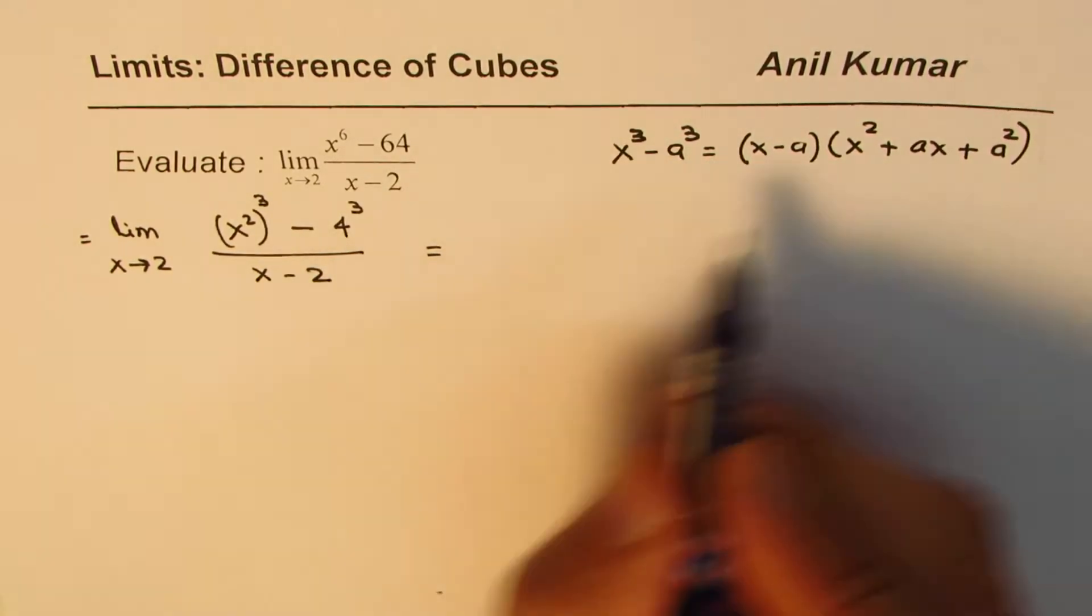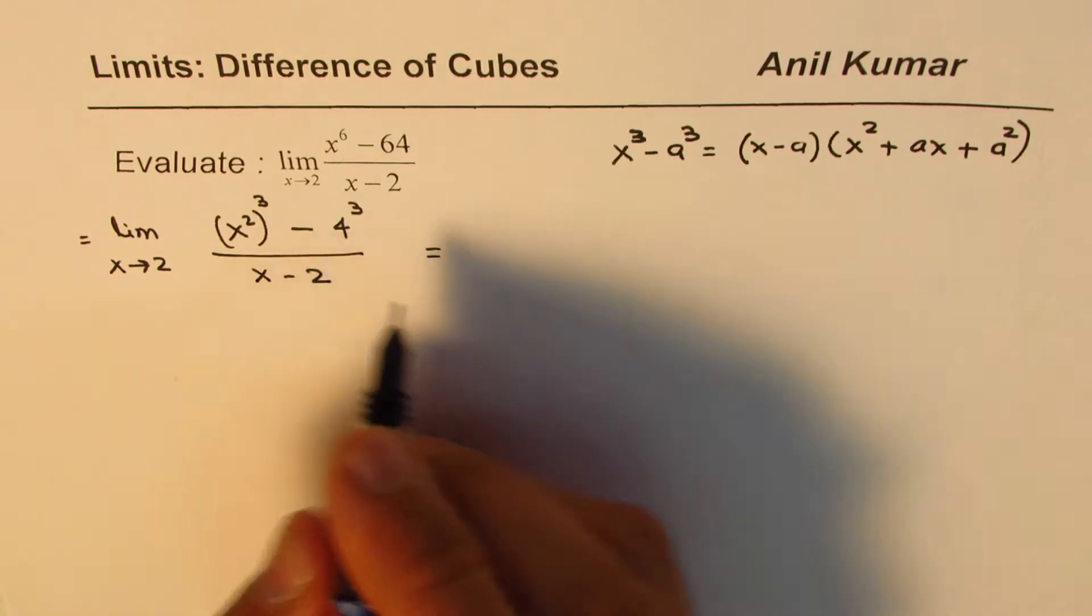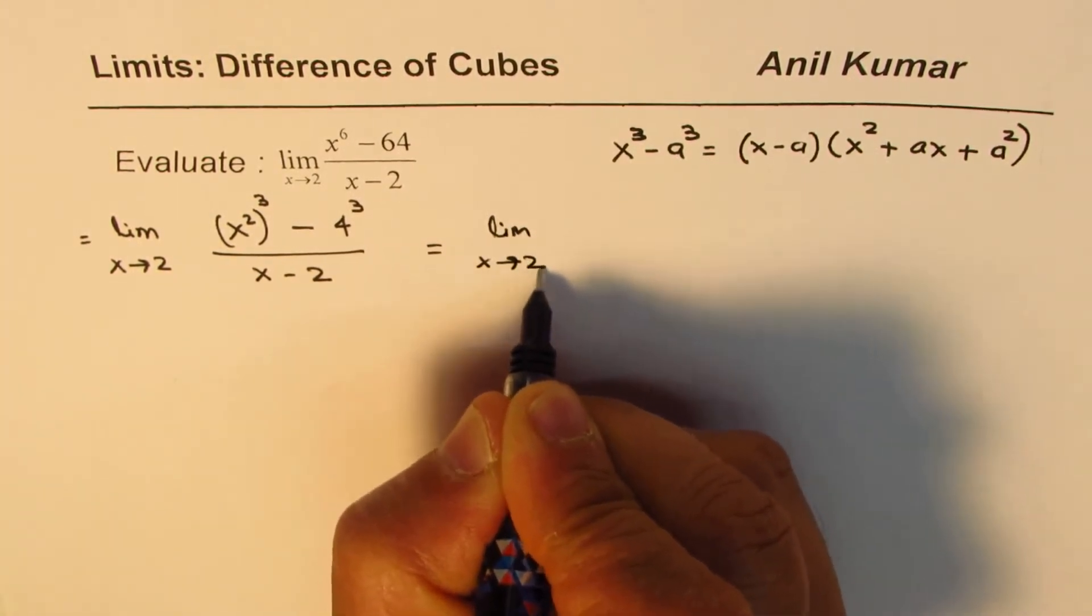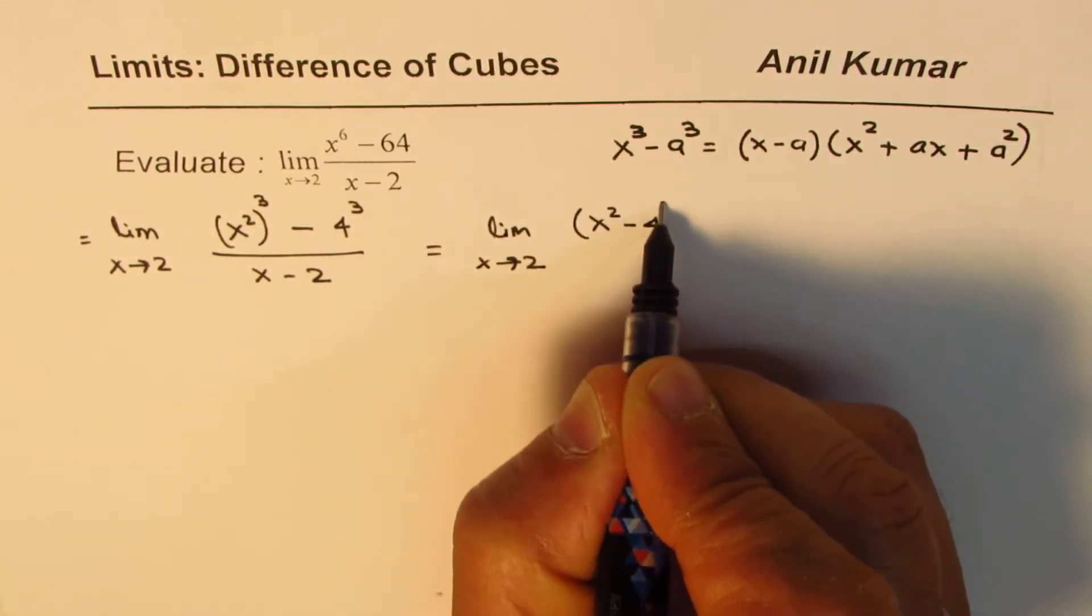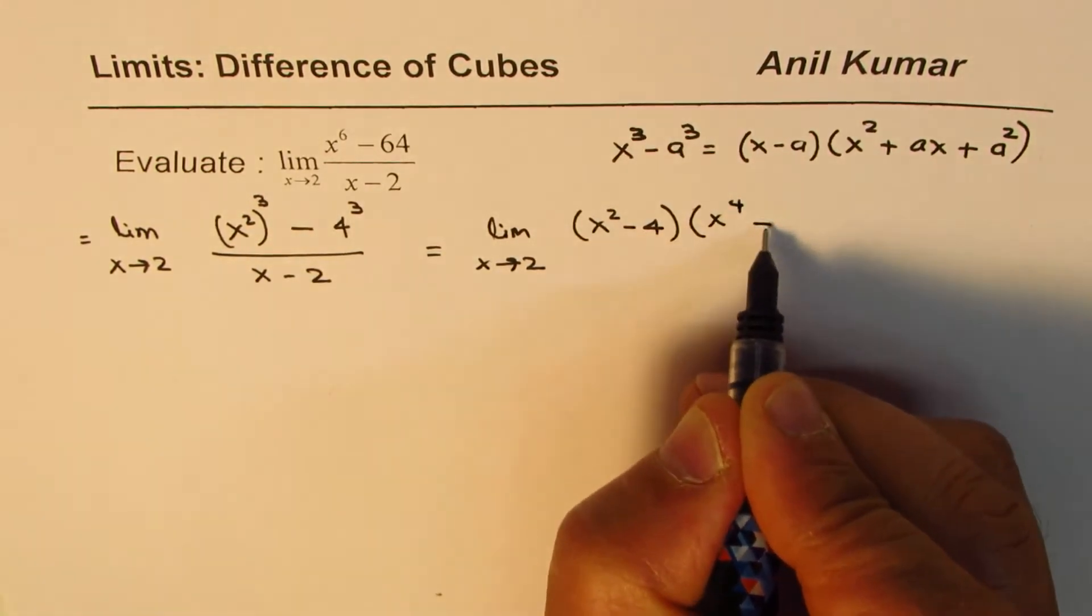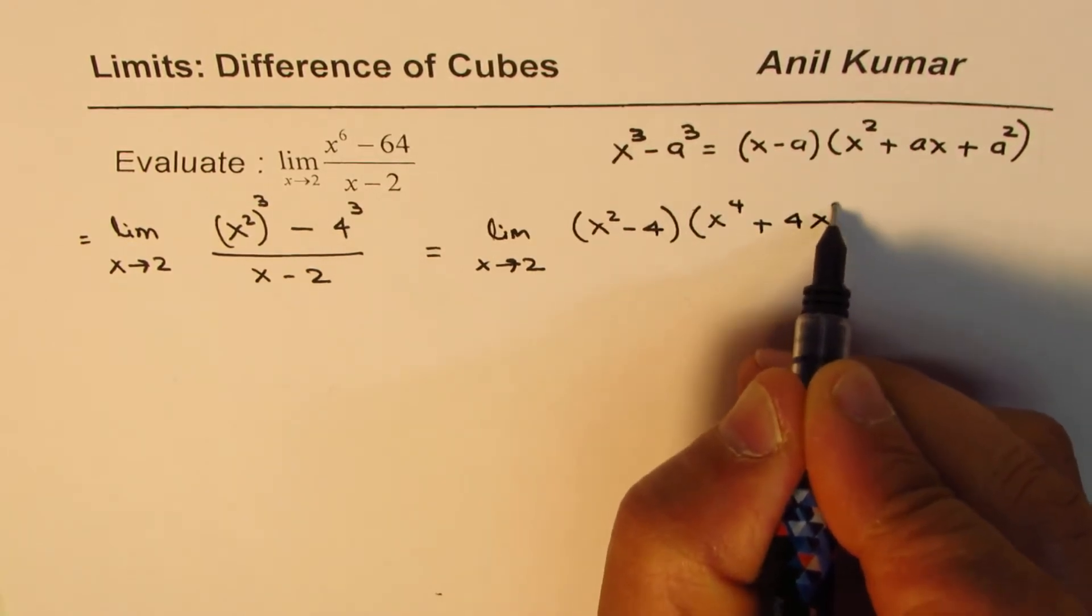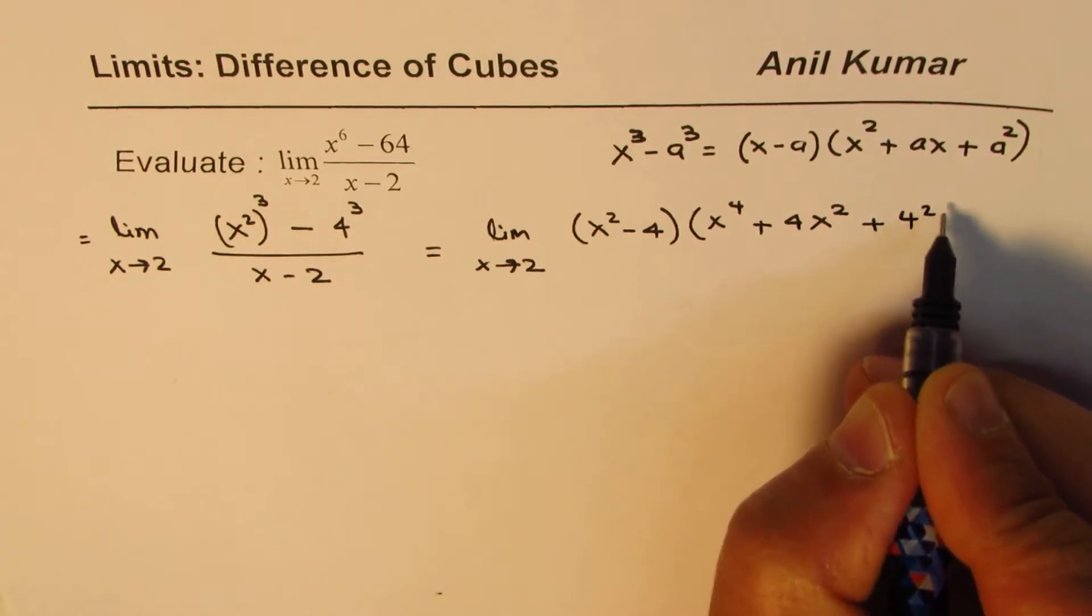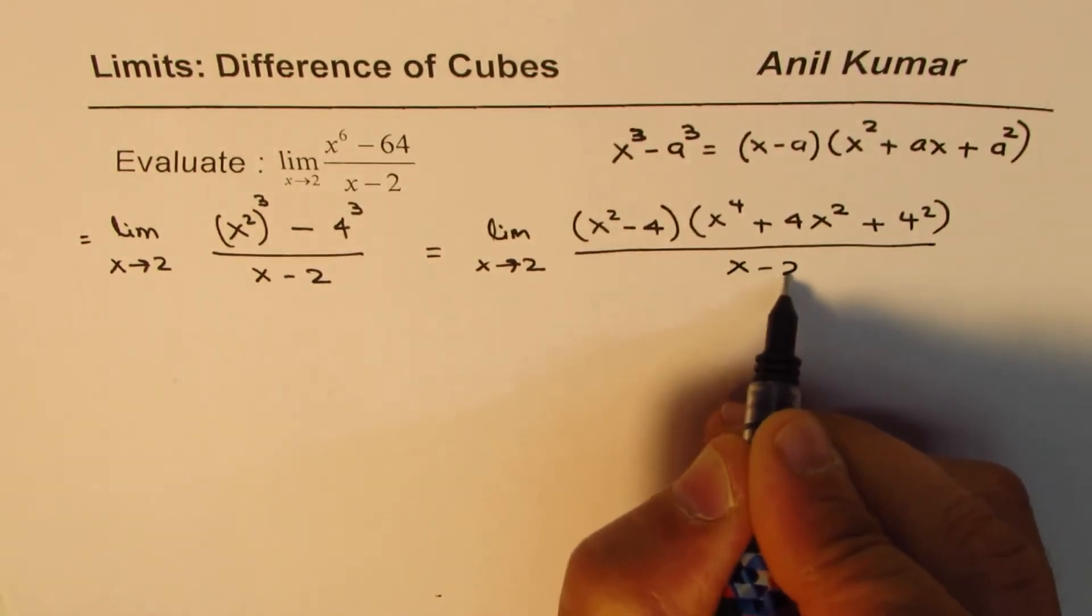Now I'll apply this formula to factor the numerator. So we get limit x approaches 2. a minus b means x square minus 4 times a square means x to the power of 4 plus multiplication of these two, that means 4x square plus square of 4, which is 16, divided by x minus 2.